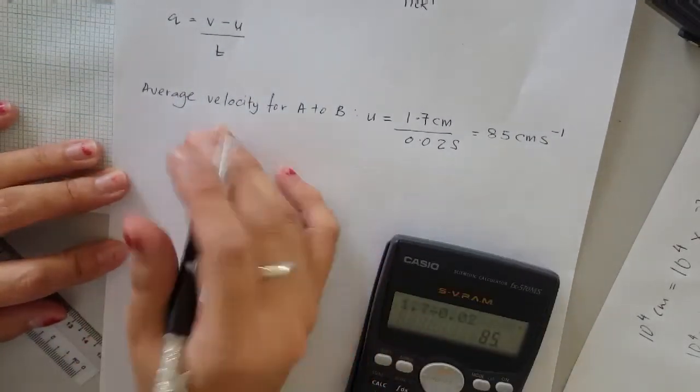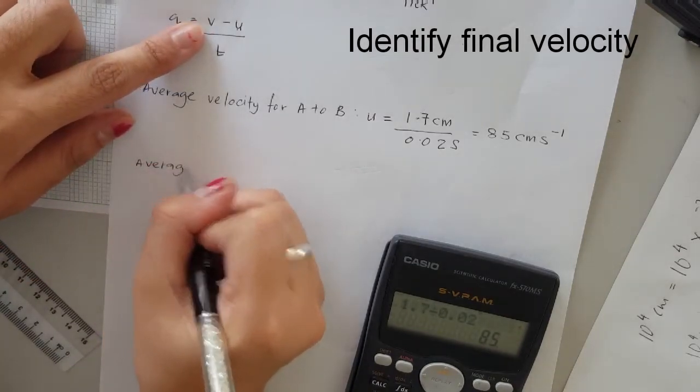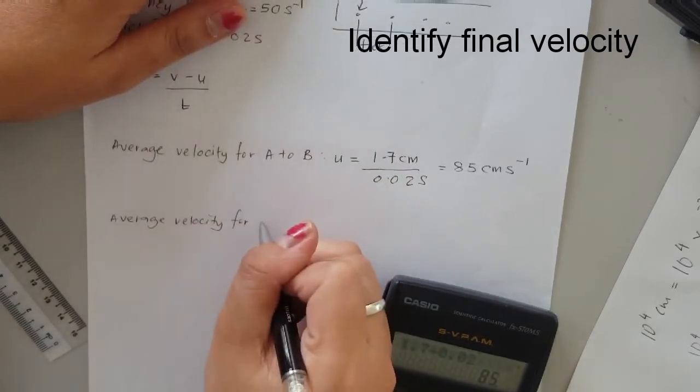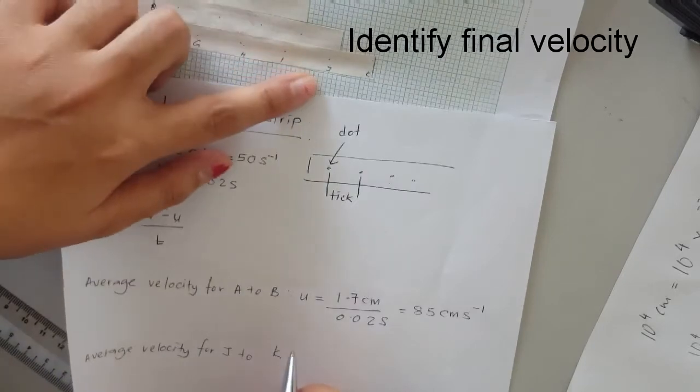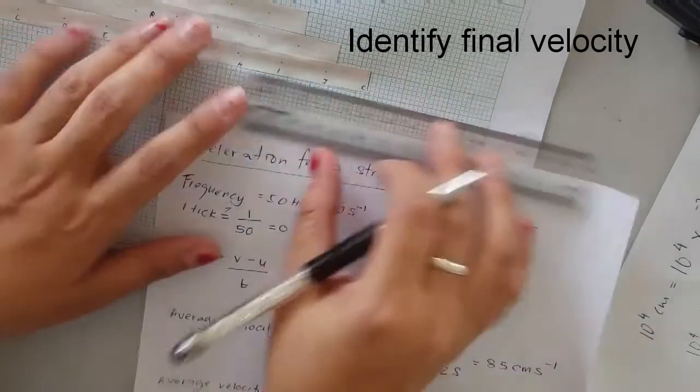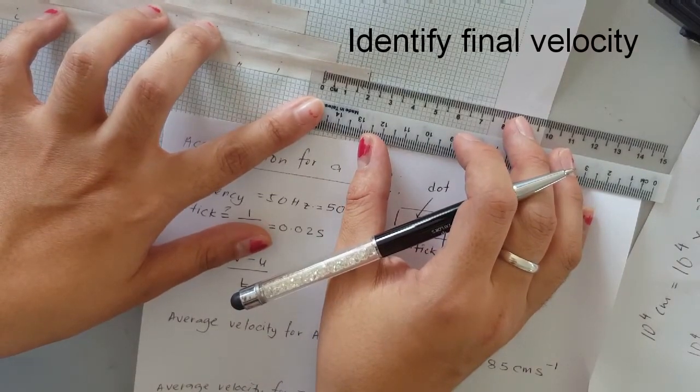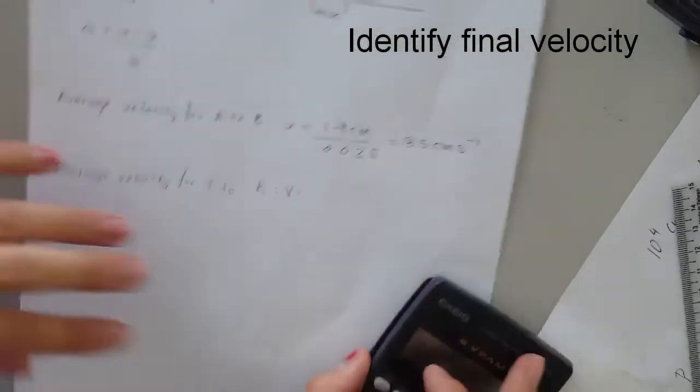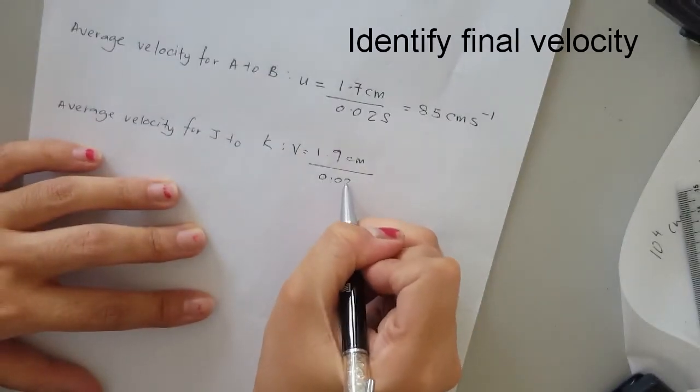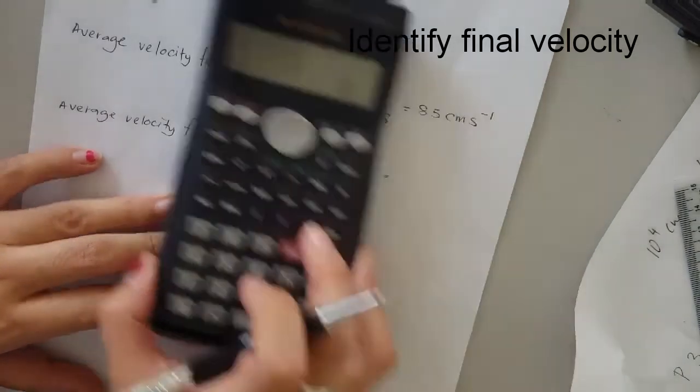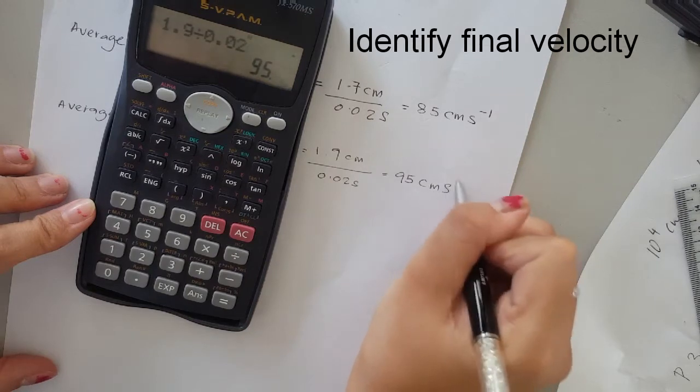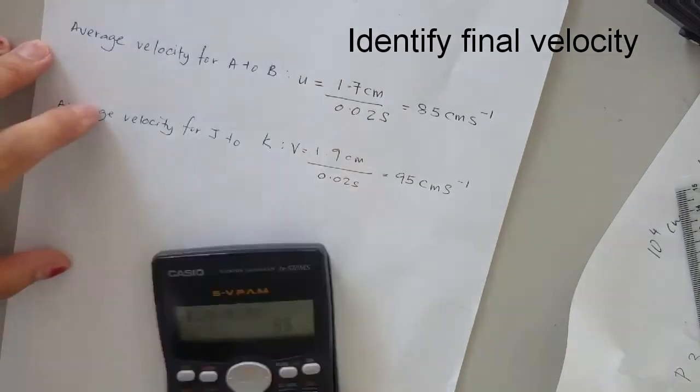Next I have to find the average velocity for the ending one, I have to find v. Average velocity for the last one, which is J to K. That's the last one, so I'm going to measure J to K. That's 1.9 cm over 0.02 again, because J to K is one tick. 1.9 divided by 0.02, that would be 95 centimeter per second.